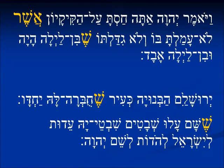Tehillim kuf kafbet, pasuk 3-4 — Psalm 122, verses 3 and 4. In this next verse from Jonah, we see both the asher and the contraction — just the letter shin by itself.